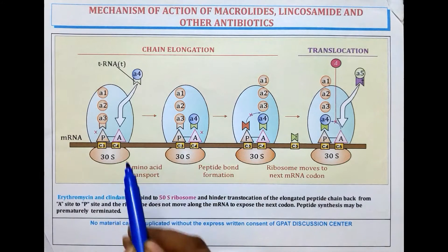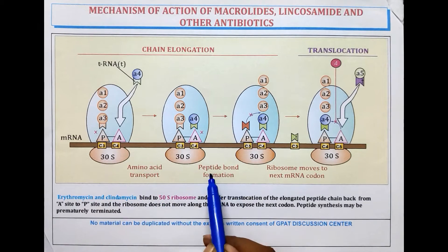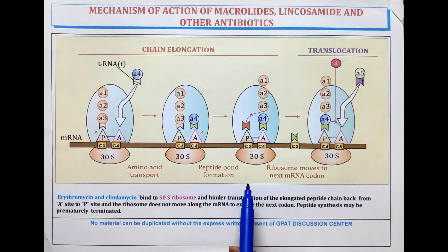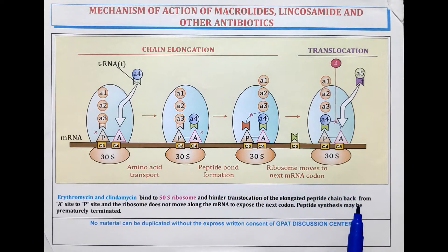Amino acid transport is done in the initiation step, then peptide bond formation happens in the second step, and the ribosome moves to the next mRNA codon in the third step.